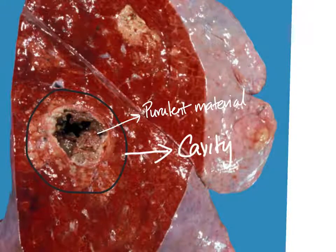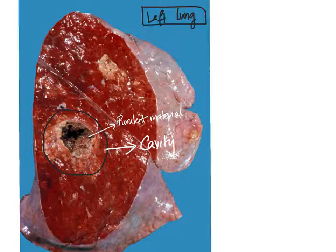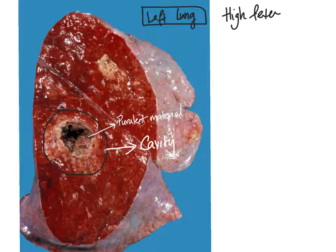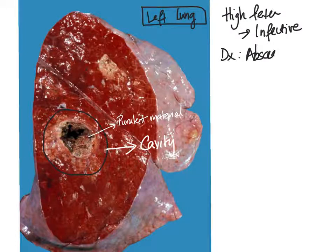So this is a localized or discrete lesion in the lung — it is a cavitating lesion. If this patient presented with high swinging fever, what would you be thinking of? This indicates most likely an infective cause, and therefore the diagnosis here is lung abscess. The gross description is that of a cavity with irregular outlines containing purulent material.